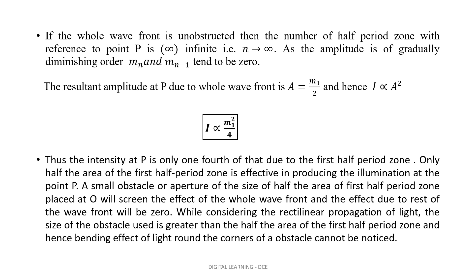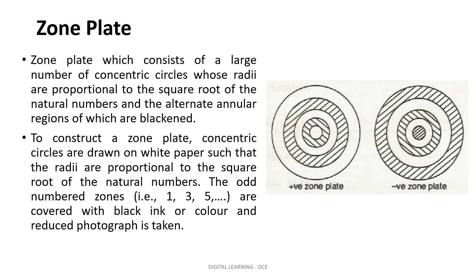We constructed half period zones in a plane wavefront and found the radii of half period zones to be square roots of the natural numbers. Zone plate works on the above principle and confirms rectilinear propagation of light. Let us see the construction of a zone plate.